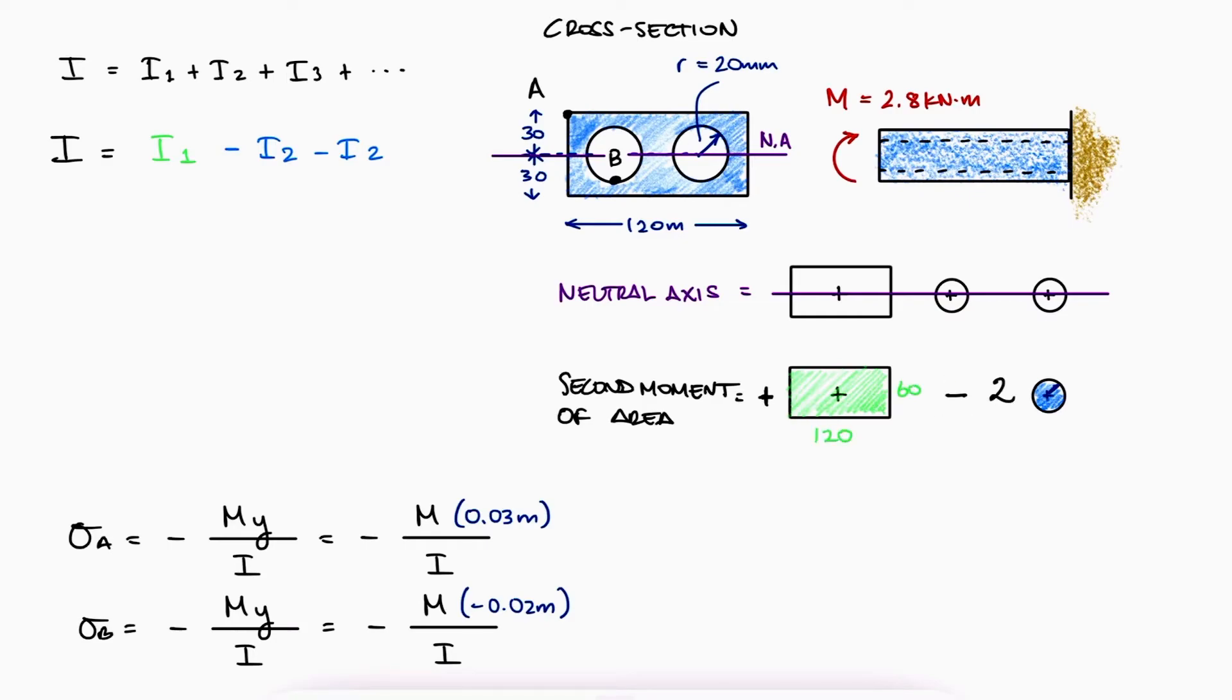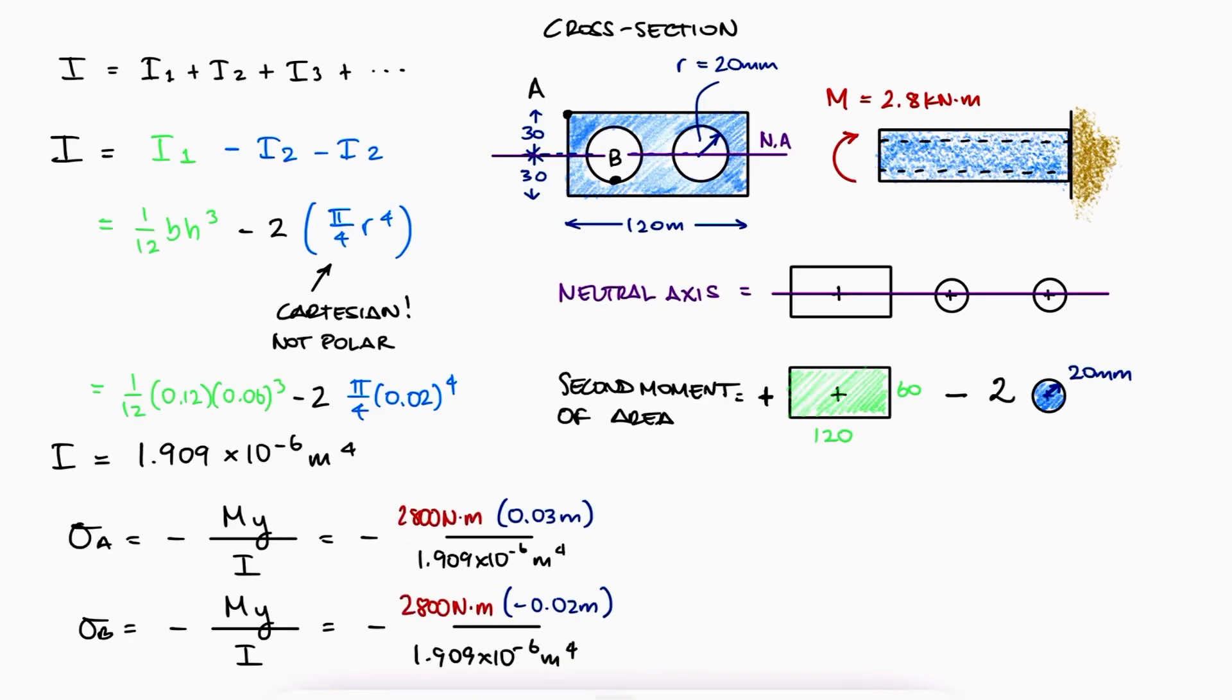With the dimensions for each shape, and the second moment of area expressions for a rectangle and a circle, we substitute the values and find the overall second moment of area. Substituting this value and the given external couple M, we find the values for the compressive normal stress due to bending at A and the tensile normal stress due to bending at B.